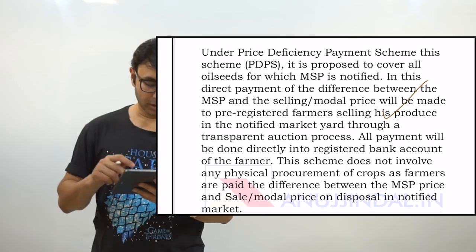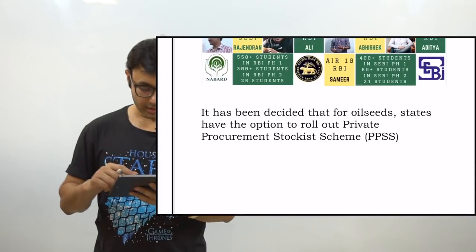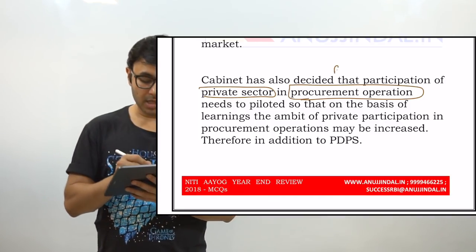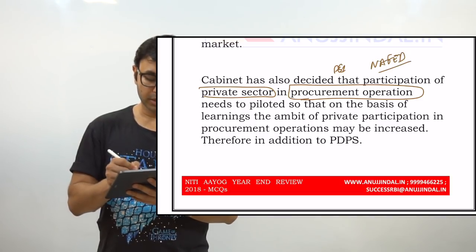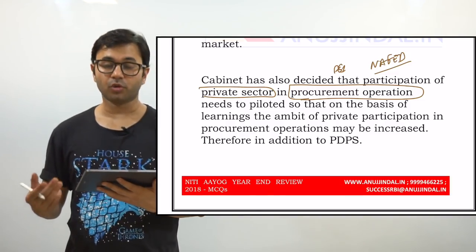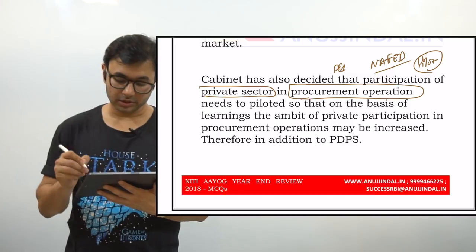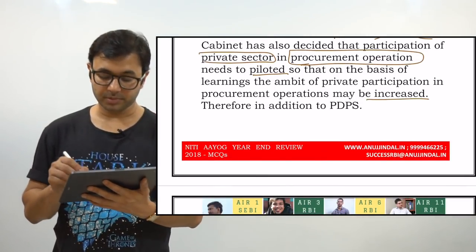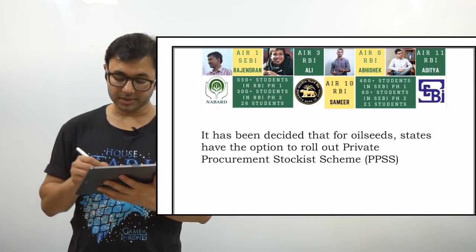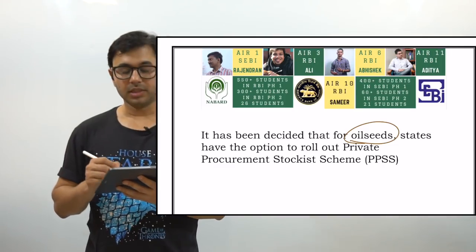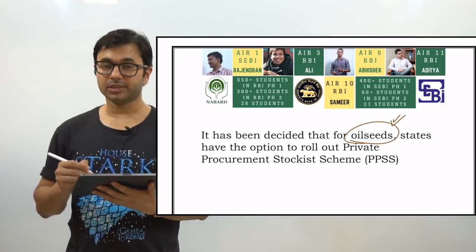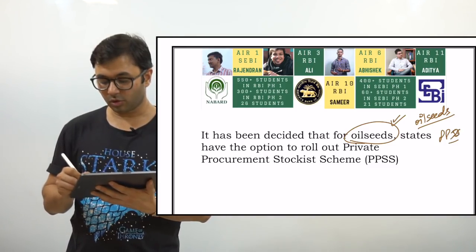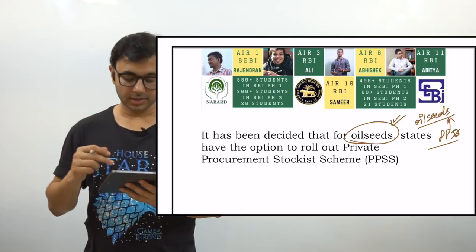PDPS has already been understood from the previous question, so no need to revisit it. The third mechanism is the Private Procurement and Stockist Scheme (PPSS) — participation of the private sector in procurement operations. Procurement has so far been done by FCI and NAFED; now the private sector should also become part of procurement operations. A pilot project is already underway, and based on learnings, the ambit of private participation may be increased. It has been decided for oilseeds that states have the option to roll out PPSS.